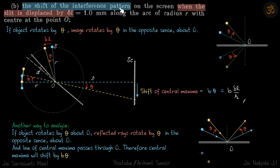Here we need to find the shift of the interference pattern when the slit is displaced by delta L along the arc of radius R with center at point O. The original source was here, and the slit is displaced by distance delta L along the arc of this circle. In this case, the mirrors are at rest and the object is displaced.